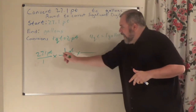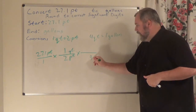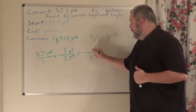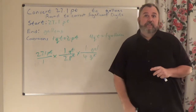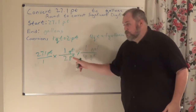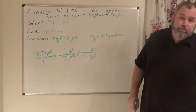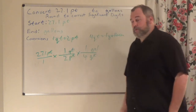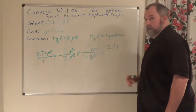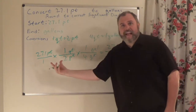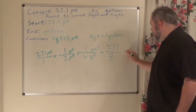Pints goes away and I've got quarts now. I don't want quarts, I want gallons — so quarts goes on the bottom, and gallons goes on top. Quarts goes away. I've set up my entire problem. Pints went away, quarts went away, what's left is gallons — which is what we want. Multiply across the top: 27.1 times 1 times 1 gives 27.1. Multiply across the bottom: 1 times 2 times 4 gives 8. Units left: gallons.